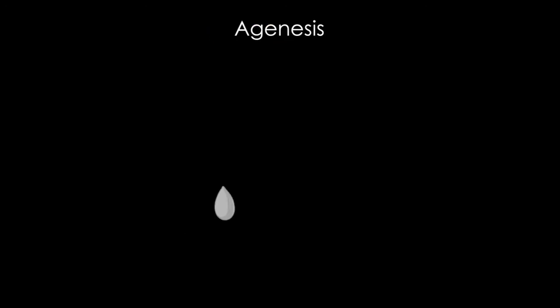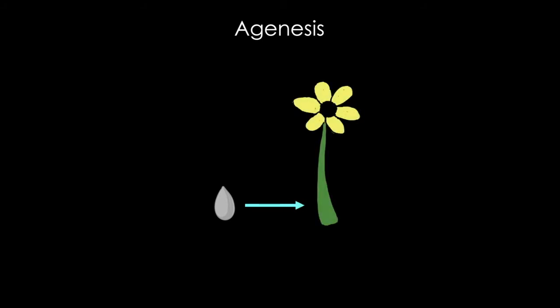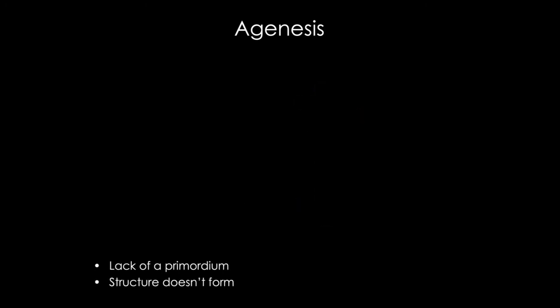Let's start with agenesis, which is complete absence of the organ or structure. Normally, an organ or tissue develops from a primordium or a seed, just like a flower grows from a seed. In Greek, 'a' means not or no, and 'genesis' means the origin. So agenesis means a lack of primordium or a lack of an origin, and typically this means we won't see any evidence of that organ in the adult.